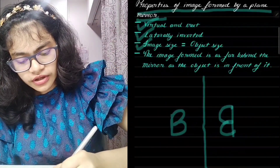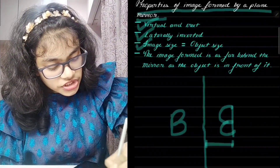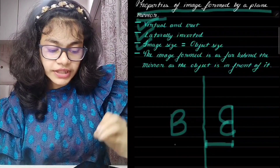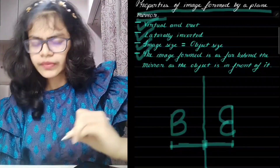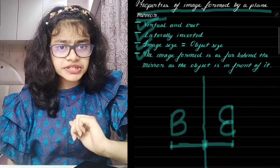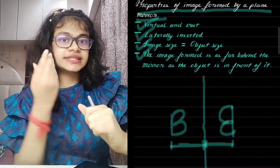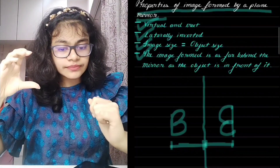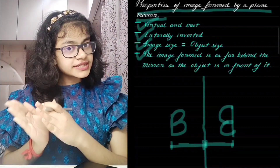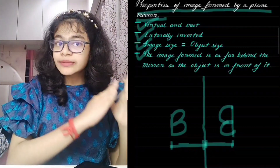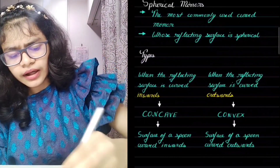The last property: the distance of the image from the mirror is equal to the distance of the object from the mirror. So the properties of a plane mirror image are: first, virtual and erect; second, laterally inverted; third, image size equals object size; and fourth, object distance from the mirror equals image distance from the mirror.